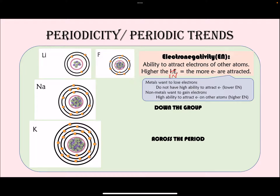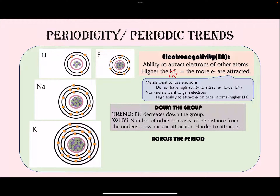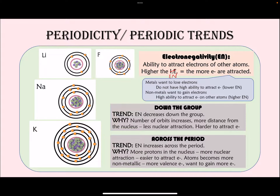Going down the group, the atom becomes bigger and bigger, so there is less nuclear attraction, making it very hard for the nucleus to attract electrons from other atoms — electronegativity decreases. Going across the period, there is more nuclear attraction, so electronegativity increases. We are also moving toward non-metals that want to gain electrons. Values for electronegativities are given in Table S.